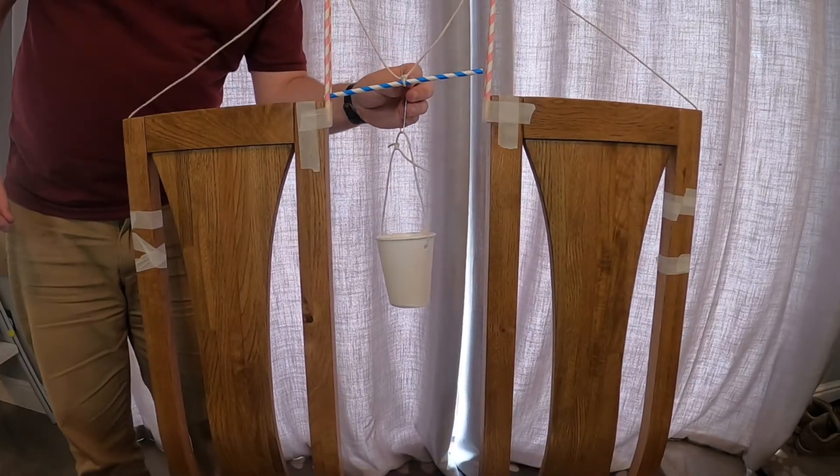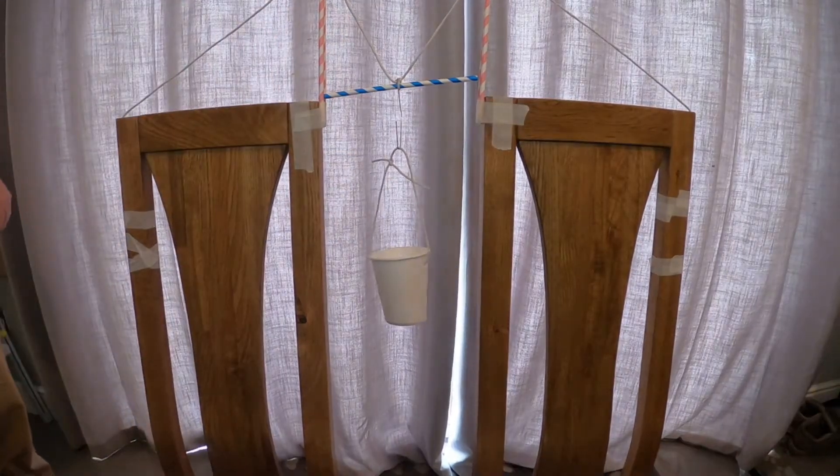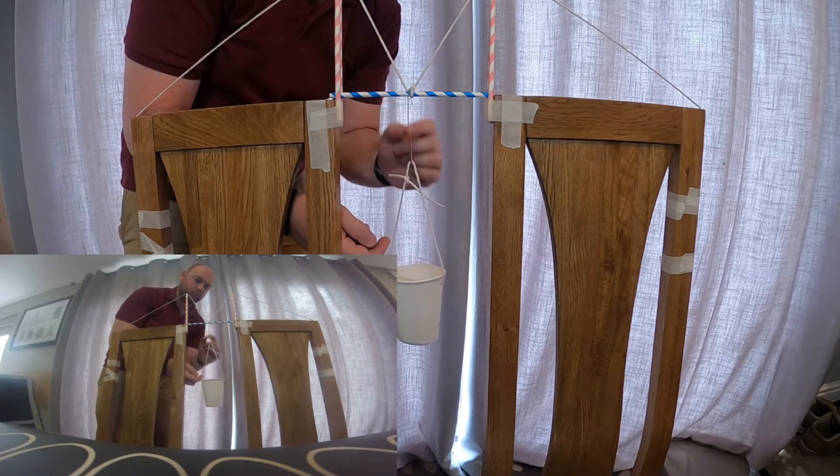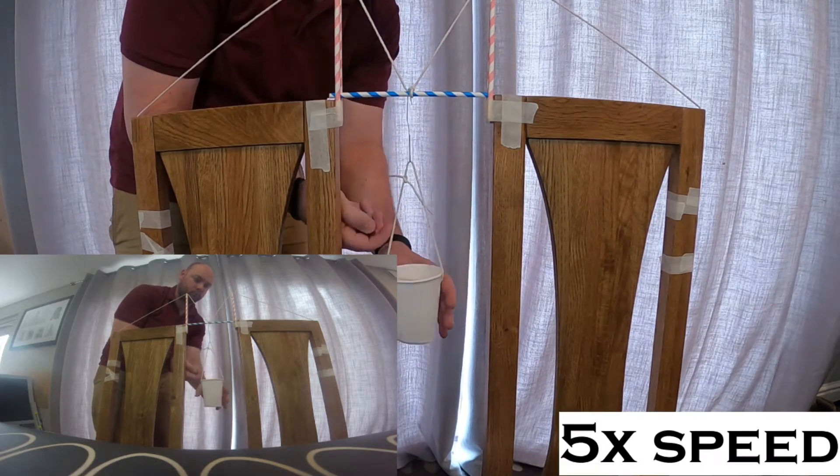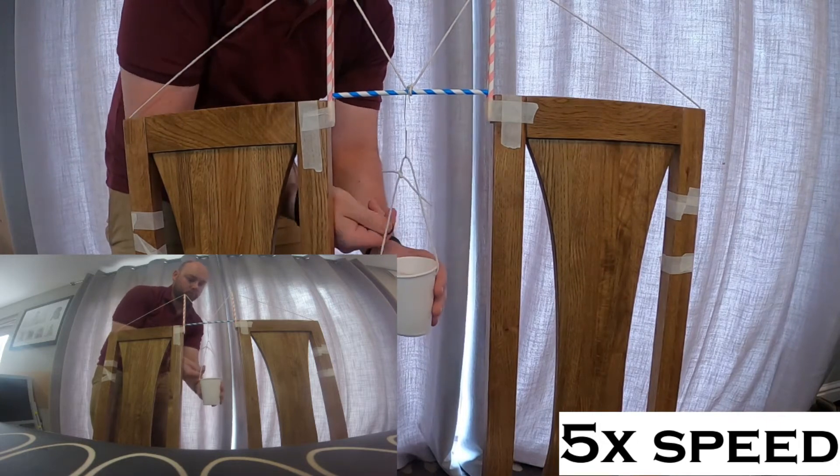Now that my suspension bridge is set up, it's time to see if it fares any better with the weight being added to it than the beam bridge did. So again, I'm going to loop the paper clip over the beam of the bridge with that paper cup and string hanging down from the bottom of the paper clip. And once again, I'm going to add pennies in once at a time, supporting the drop of them with my hand underneath the cup before letting go to see how well the bridge copes with the weight.